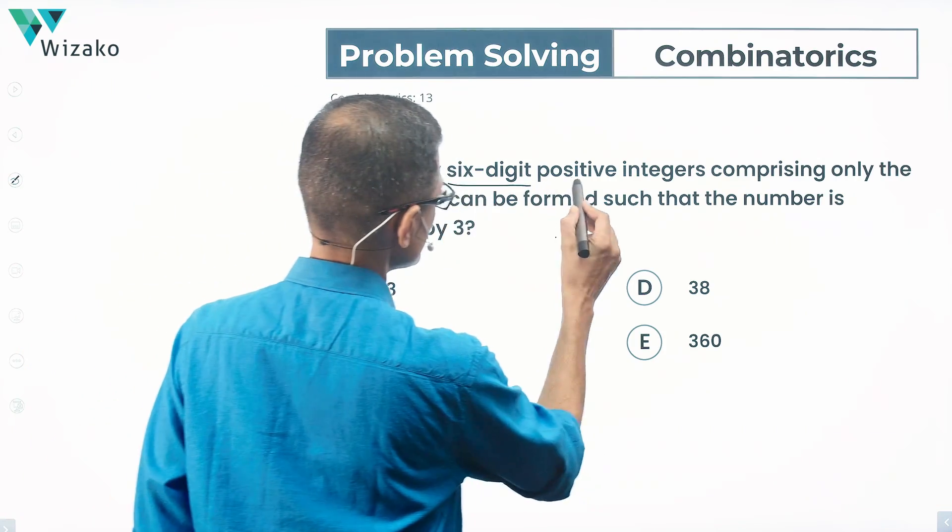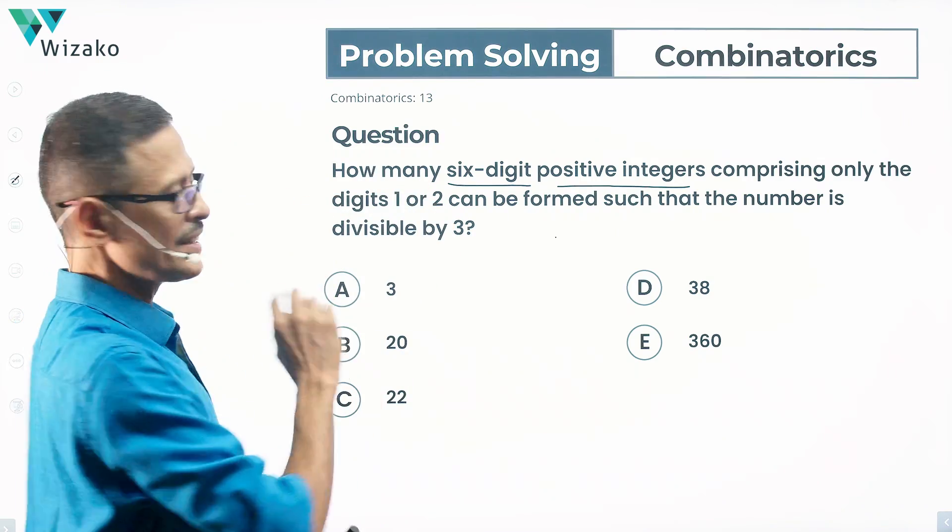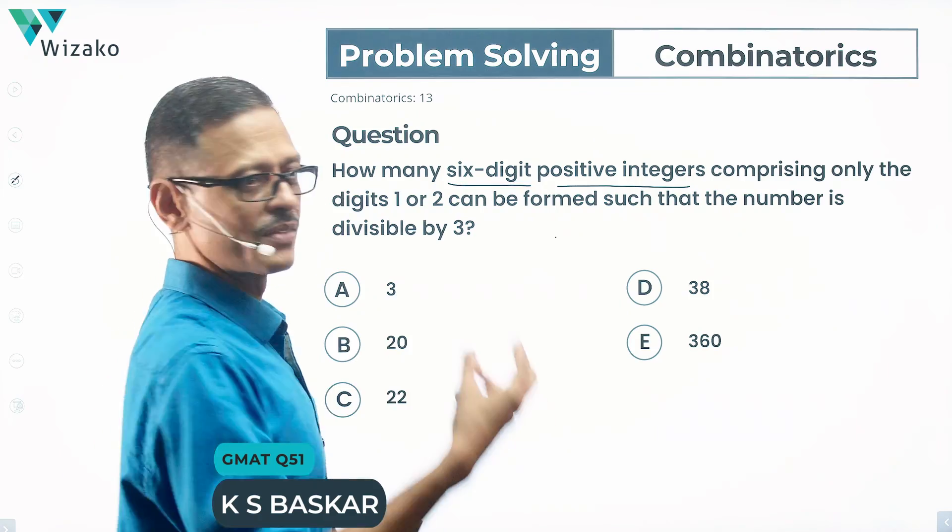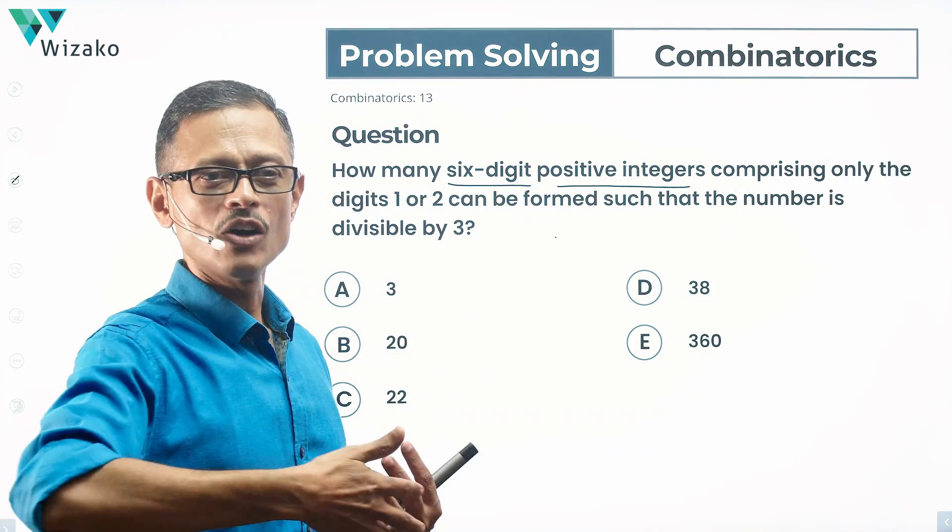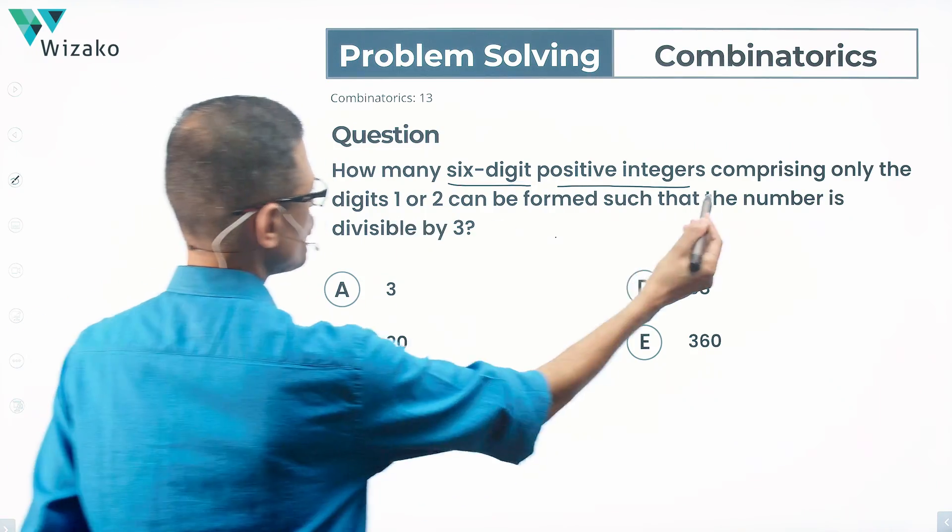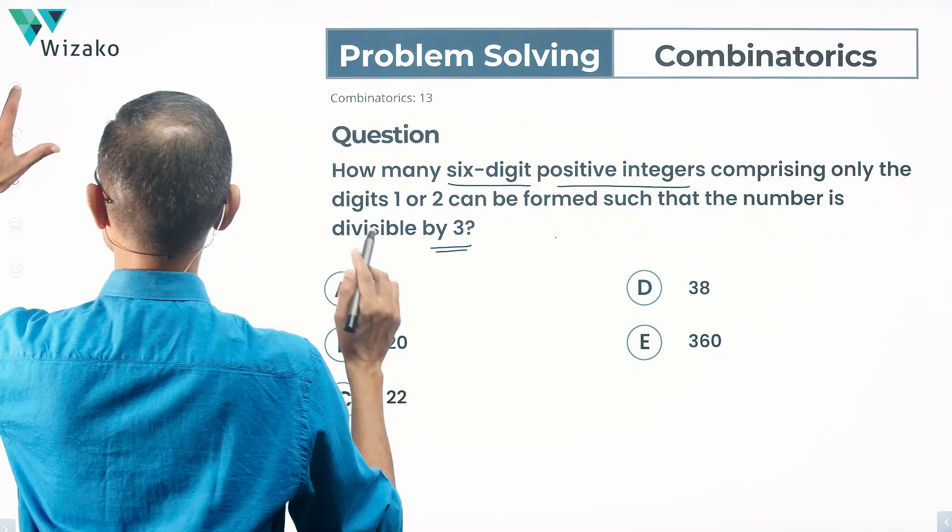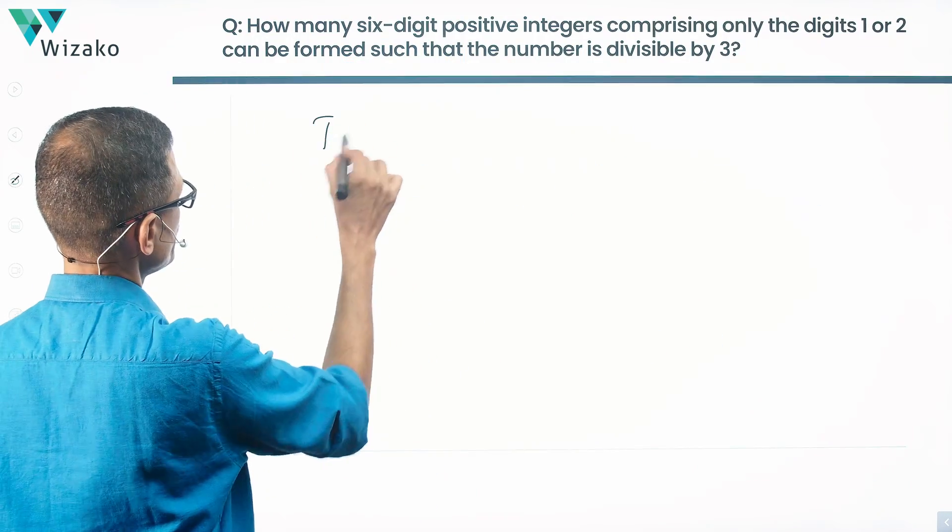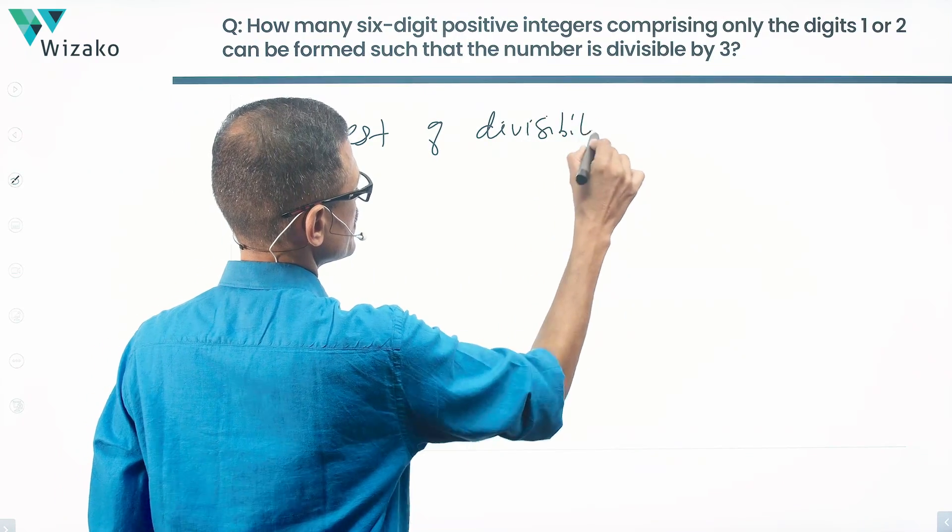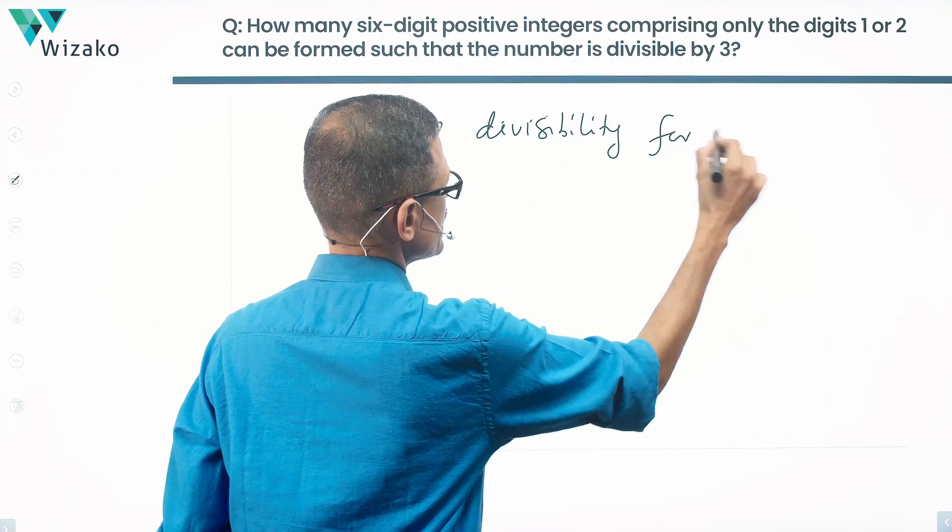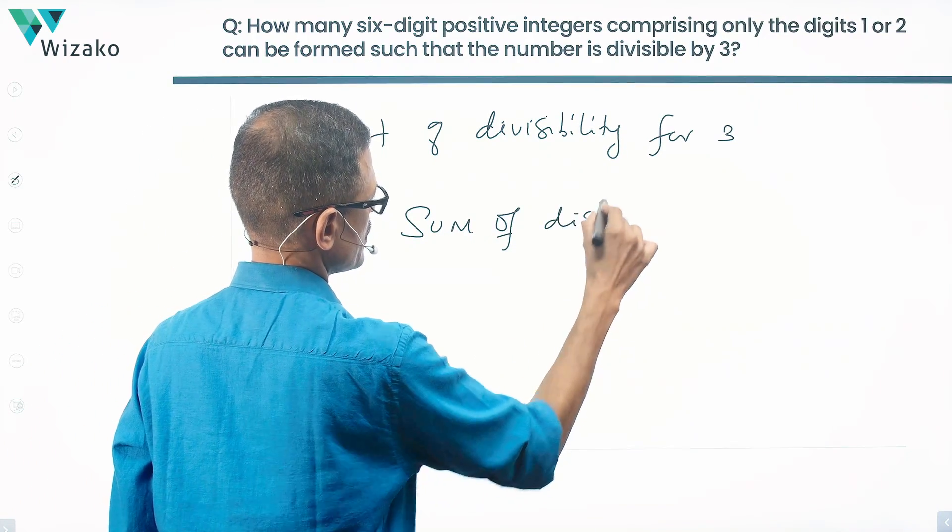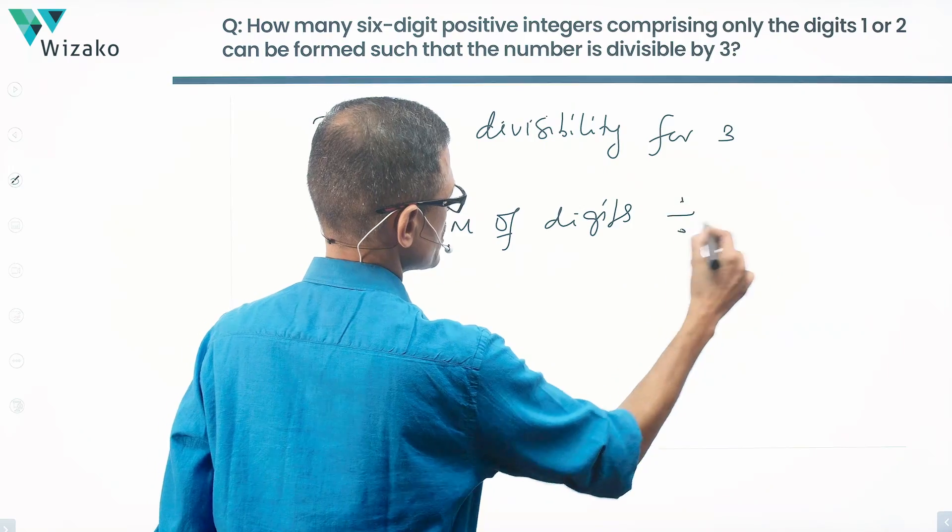How many six-digit positive integers comprising only the digits 1 or 2? So combination of 1 and 2 is possible. Something like 1, 2, 1, 2, 1, 2 is okay. All of them being 1s is okay. All of the number is divisible by 3. What is the test of divisibility for 3? The sum of the digits should be divisible by 3.